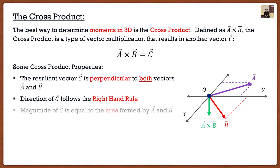The next property is the magnitude of this resultant, which is actually equal to the area formed by vector A and vector B. This isn't something you're really going to utilize, but it's going to make the proof on the next page rather simple. So if we have vector A and vector B and we cross them to get vector C, the magnitude of C is equal to the area of the parallelogram formed by A and B.